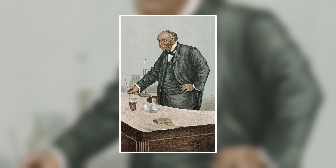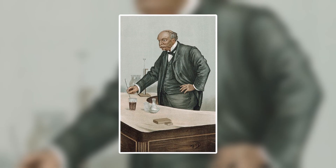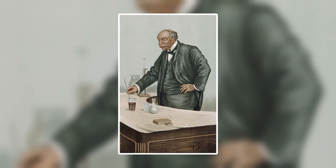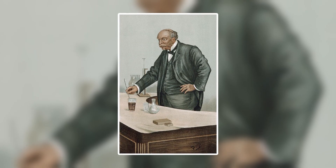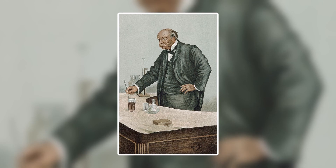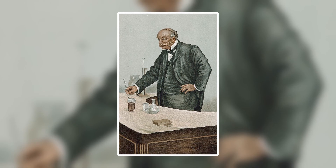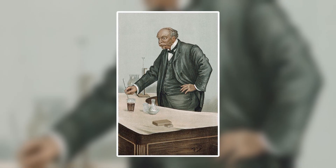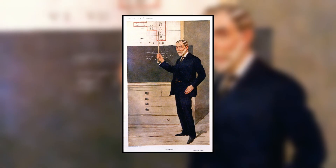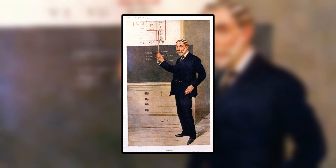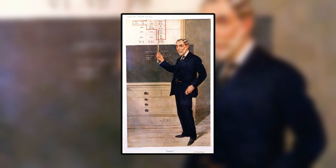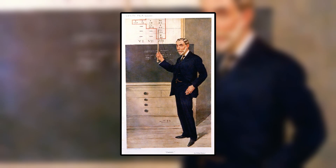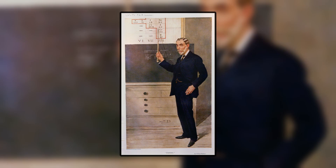Rayleigh ended up winning the Nobel Prize in Physics in 1904 for his discovery of the differing densities of nitrogen gas and the resulting discovery of Argon. And Ramsey won the prize in chemistry that same year for both the discovery of Argon and for earthbound helium.